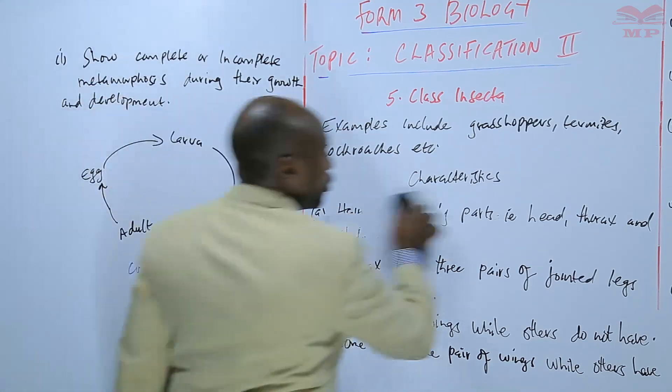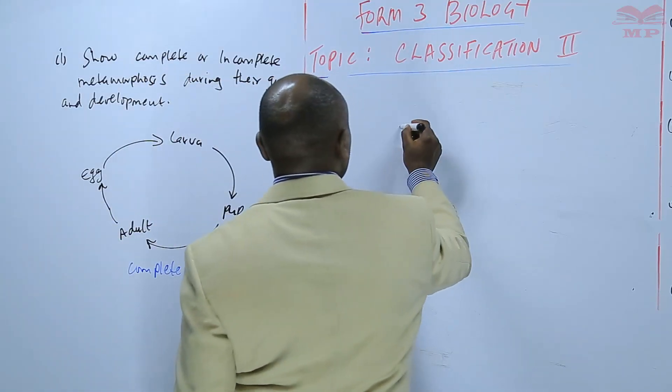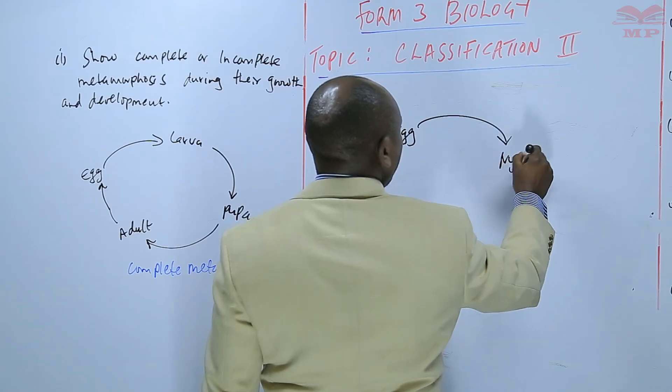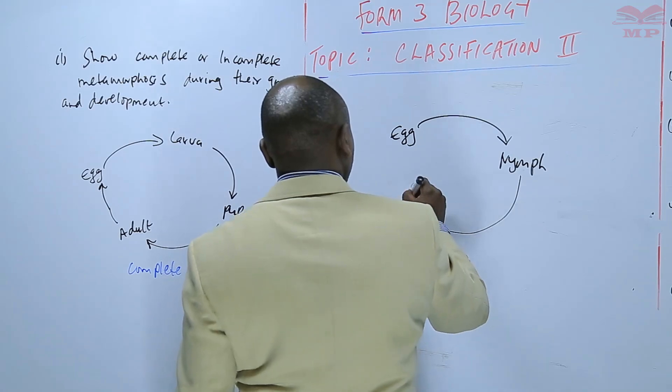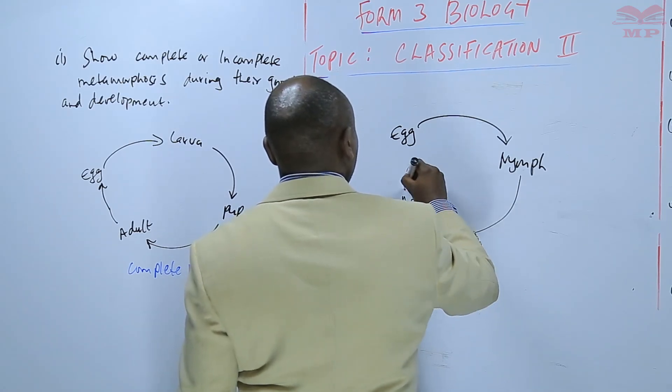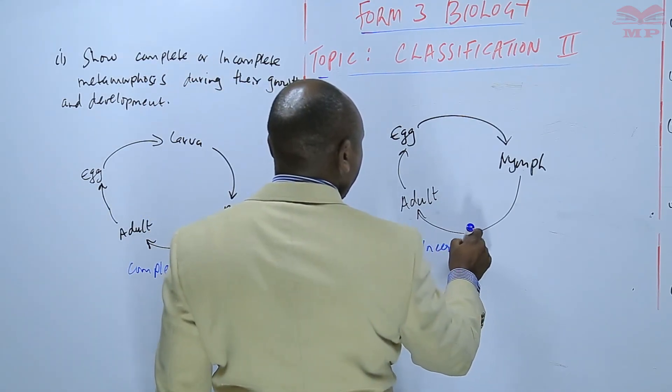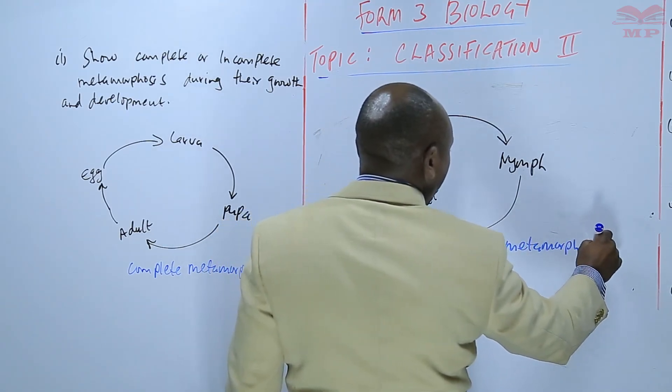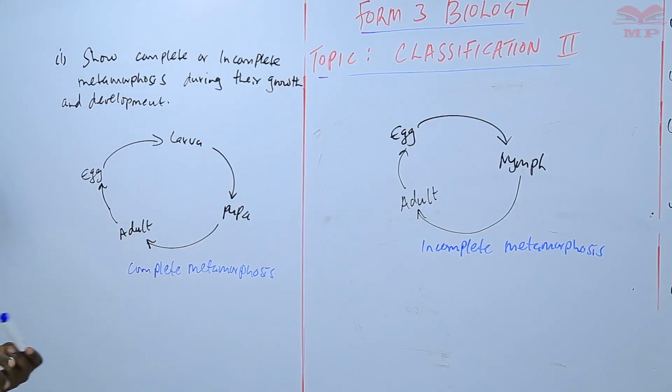So it's a cycle, or they can have the second type of metamorphosis during their growth and development.